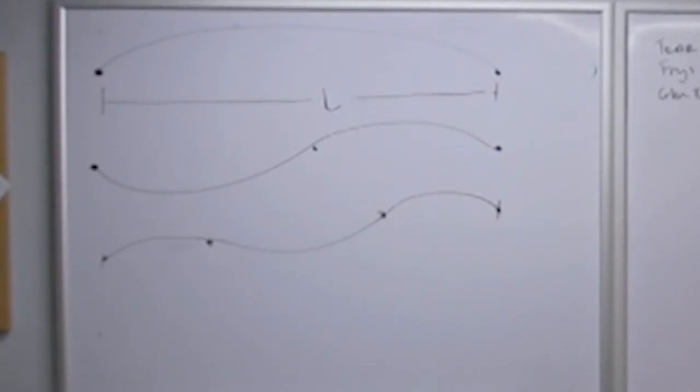But in principle, theoretically, there's as many modes as there are molecules in the string. Realistically, you don't care at all about the resonances that have frequencies that are higher than what the human ear can hear. So then the question is, how do we figure out what the frequencies of these resonances are?